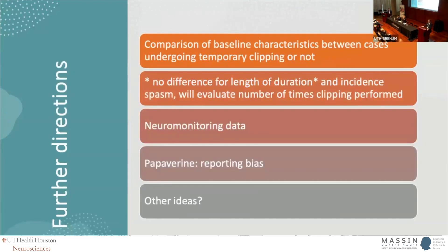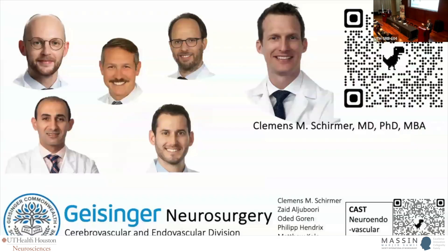There are a few other things we want to pull out: how often was this treated, for example with papaverine; what does neuromonitoring data show for patients where we have it; and do we have any baseline variation — for instance, propensity matching for these patients. With that, I come to a conclusion. Thank you very much — I want to recognize my partners who helped me with this.